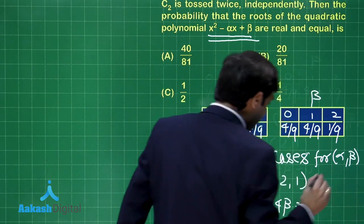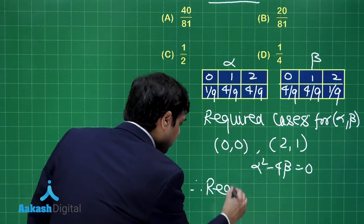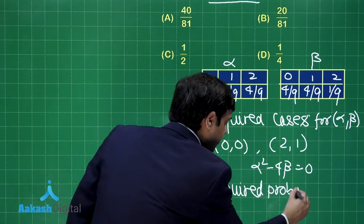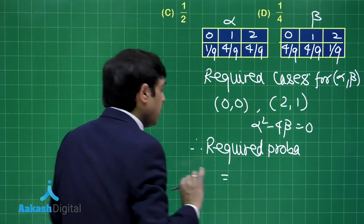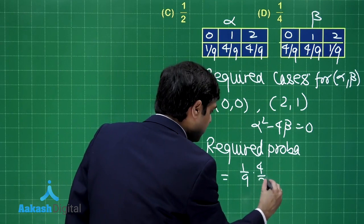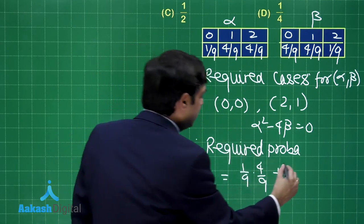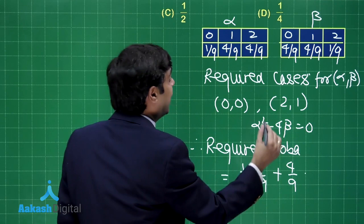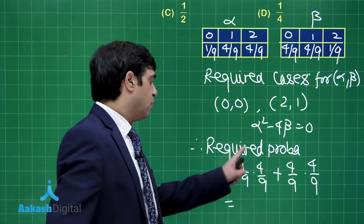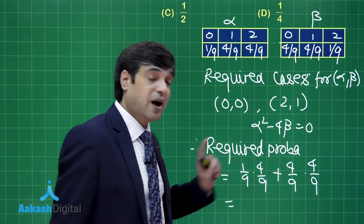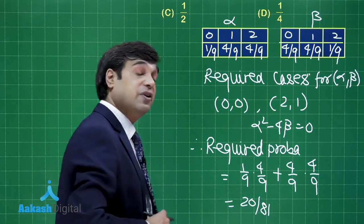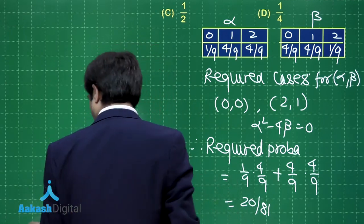So time to write the required probability. Therefore, required probability is equal to 0, 0 meaning 1 by 9 into 4 by 9 plus 2, 1 meaning 4 by 9 into 1 that is 4 by 9. So this gives you 4 by 81 plus 16 by 81 or 20 by 81. So the correct answer for this question is 20 by 81.